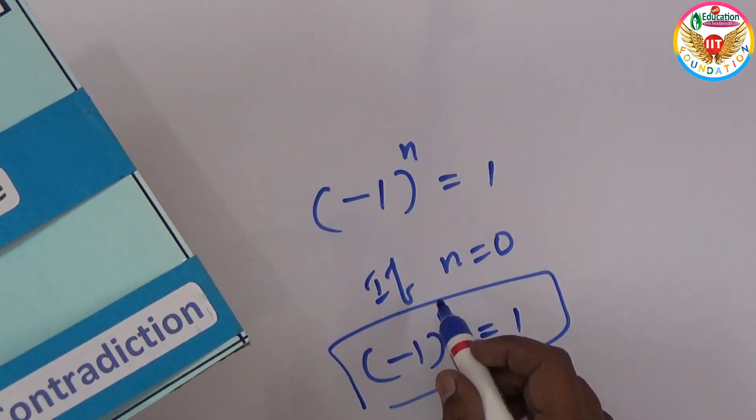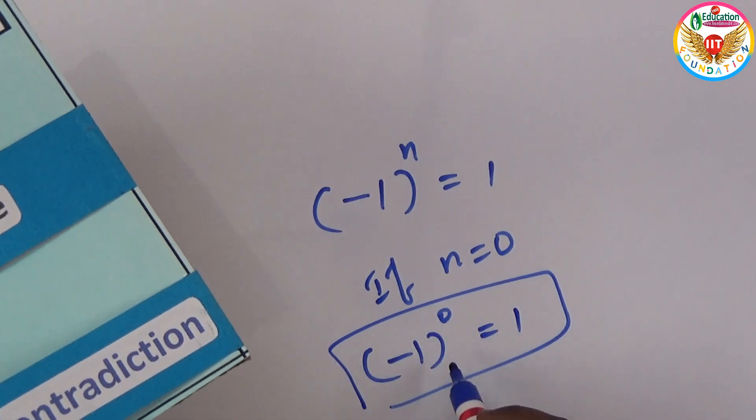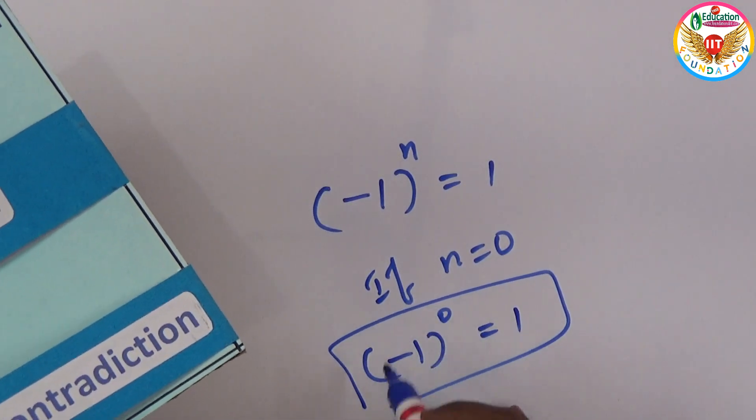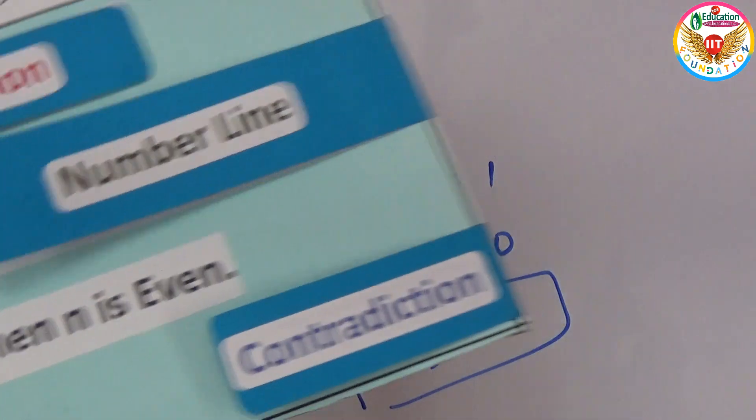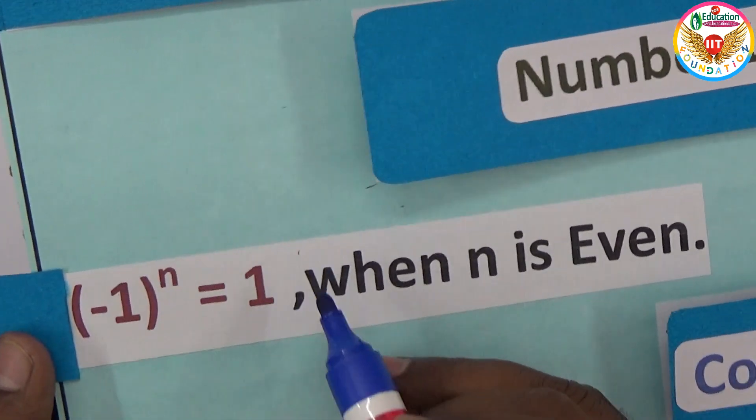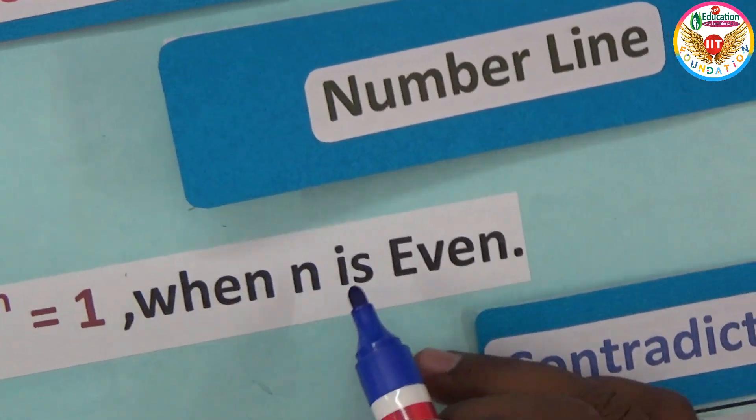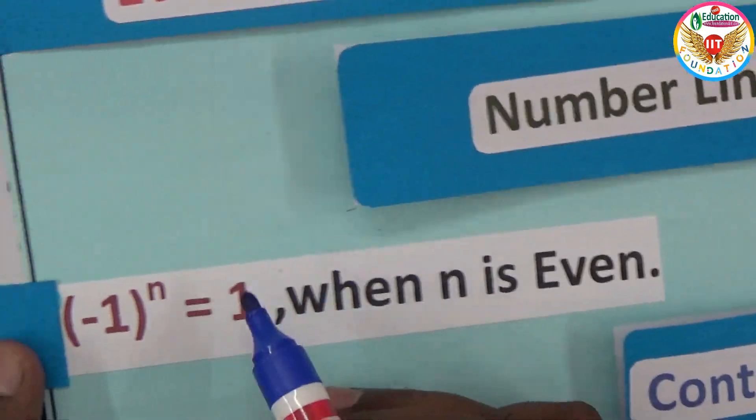Any number to the power zero is one, except zero, because zero to the power zero is not one. Apart from that, any number to the power zero is one. That's right. Minus one to the power zero is one, then zero is even because n is even. This is according to this condition.